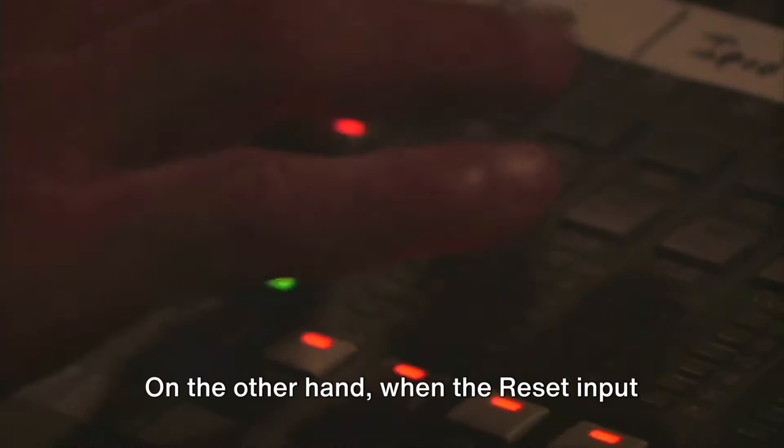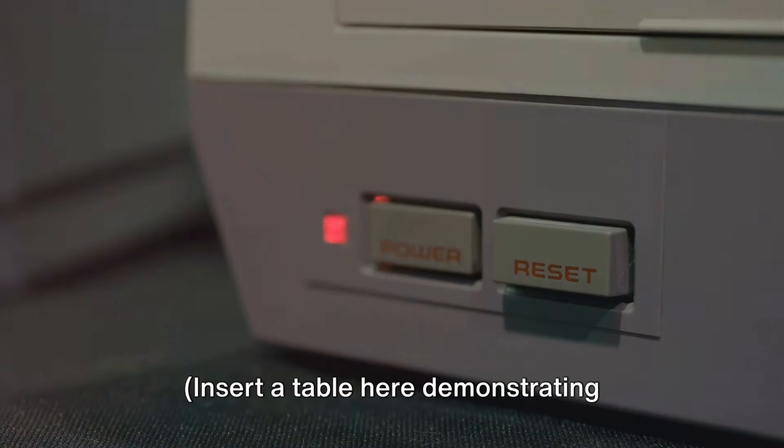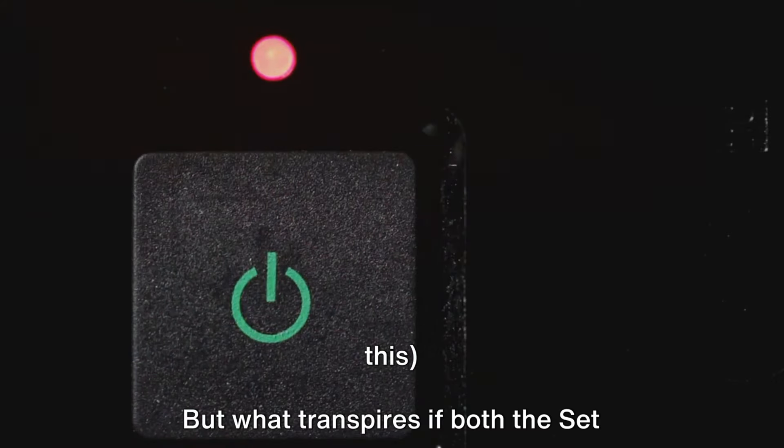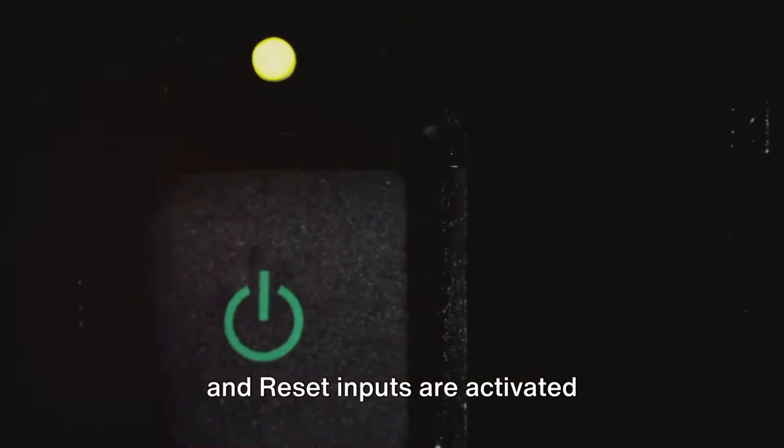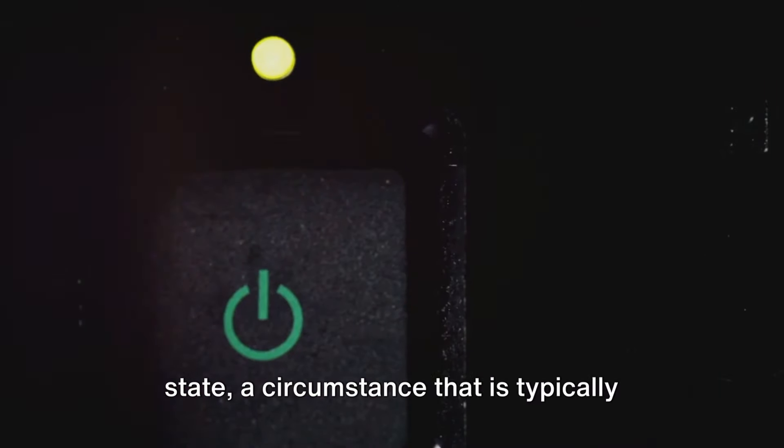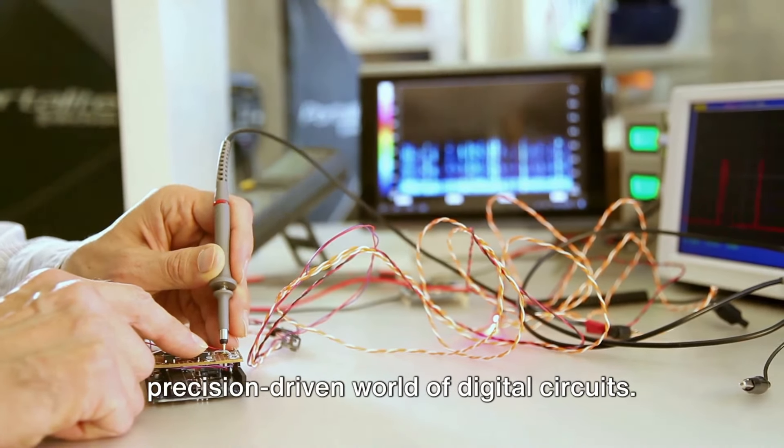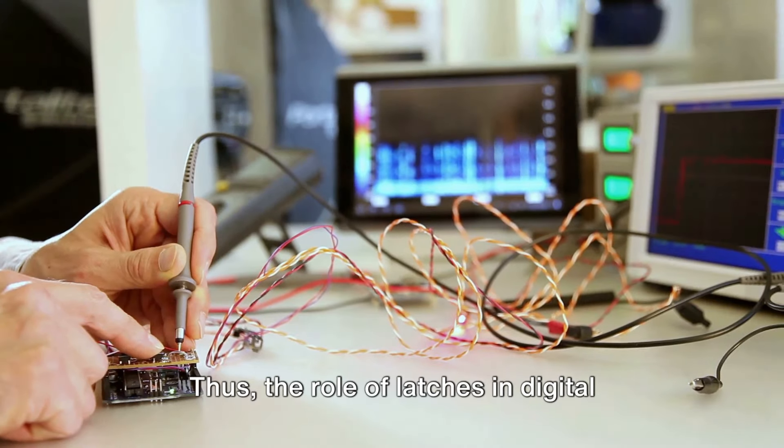On the other hand, when the reset input is actuated, the output is reset to 0. Insert a table here demonstrating this. But what transpires if both the set and reset inputs are activated simultaneously? This leads to an undefined state, a circumstance that is typically circumvented in digital circuit design. This is due to the fact that undefined states can lead to unpredictable outcomes, something that is not favored in the precision-driven world of digital circuits.